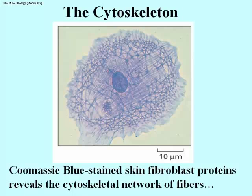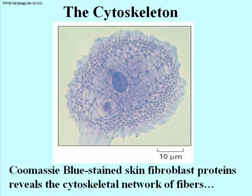Think of them as intracellular bones — that's why we call it a cytoskeleton. The cytoskeleton gives cells shape and also allows cells themselves to move, or components within cells — organelles, vesicles and the like — to move as well. We'll see specific examples of all of this shortly.